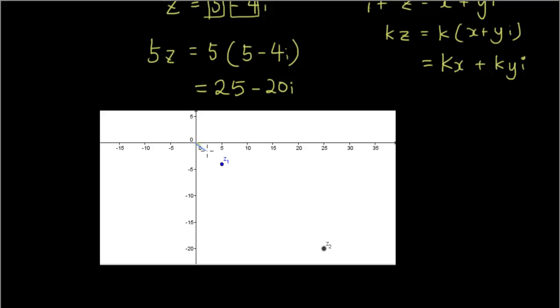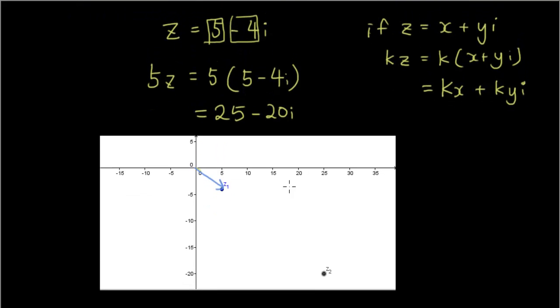Basically what has happened is originally z1 only has a length, a magnitude, which you can find using Pythagoras. z2, which comes from 5 times z, has 5 times that magnitude. Okay, so the line from here to here, if I can draw a straight line...